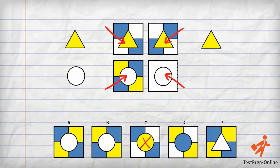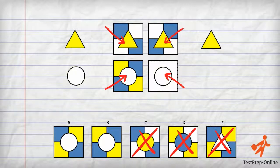We can eliminate answer choice C since it contains a yellow circle, answer choice D since it contains a blue circle, and answer choice E since it does not contain a circle but a triangle. We are left with answer choices A and B. Which is the correct answer?